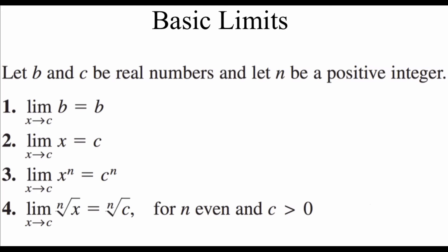So here we've got a list of basic limits that we're going to take a look at. We're going to let b and c be real numbers, and n is going to be a positive integer. If we look at this first one, we've got the limit of b as x approaches c, and b is just a real number, so this would be a constant function. The answer to this limit is going to be just whatever that b value is.